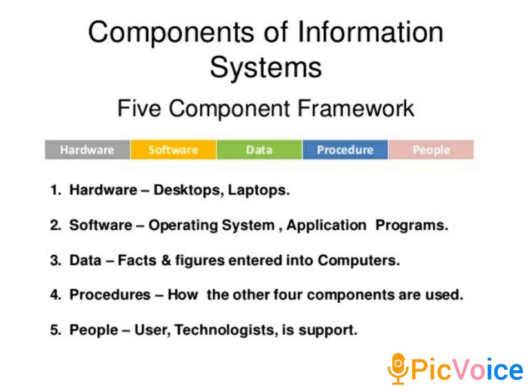Now we see human resources and procedures. We need human resources to manage a system. The main purpose is that end users and manpower are required to run and manage the system. Without manpower, we cannot access all the contents of a system. End users may be accountants, engineers, salespersons, customer clerks, or managers. Human resource management is used to access and control all four components.